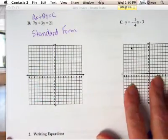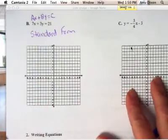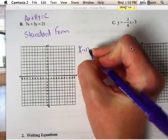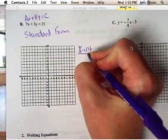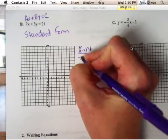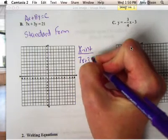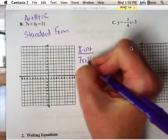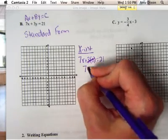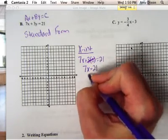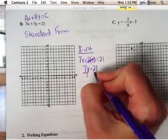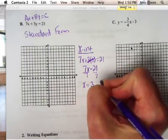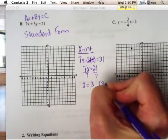The goal in standard form is to find the X and Y intercepts. To find the X intercept, you plug 0 in for Y. So we have 7X plus 3 times 0 equals 21, and we zero out that term. So we get 7X equals 21. Divide by 7, so your X intercept is 3, which means you have a point at 3, 0.